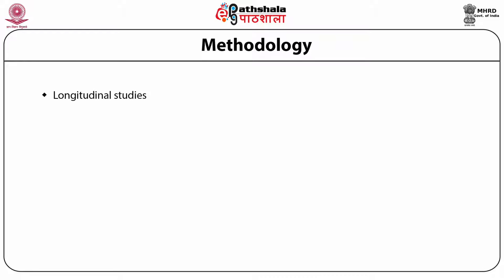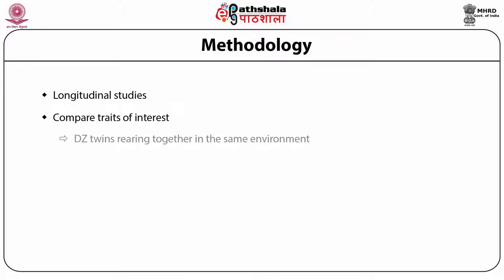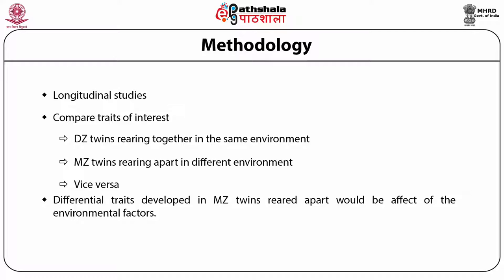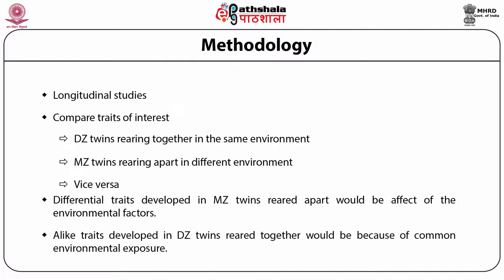Methodologically, twin study is a longitudinal study where the researcher compares traits of interest in dizygotic twins reared together in the same environment, or in monozygotic twins reared apart in different environments, or vice versa. It is based on the assumption that differential traits developed in monozygotic twins reared apart would be the effect of environmental factors. Similarly, alike traits developed in dizygotic twins reared together would be because of common environmental exposure. One important measurement is the concordance score of a trait, defined as the percentage of pairs in which both twins express the trait among pairs of twins in whom at least one has the trait.